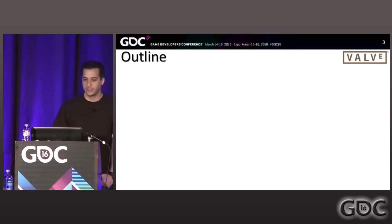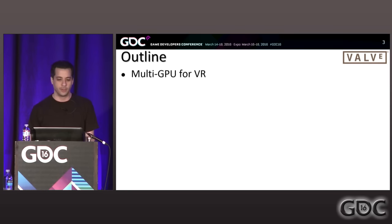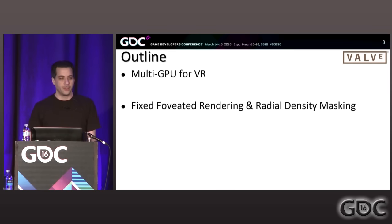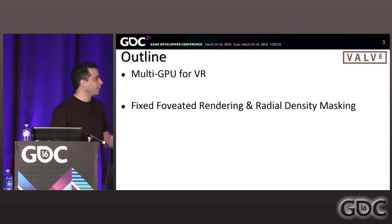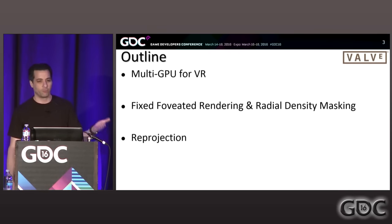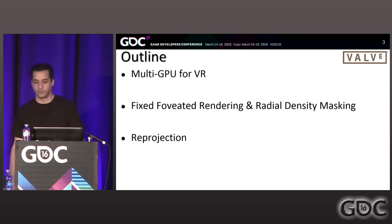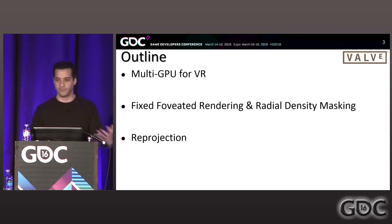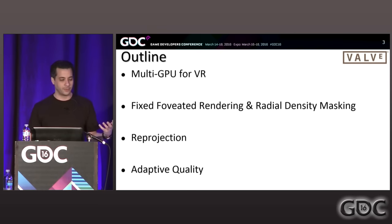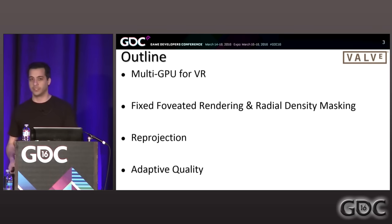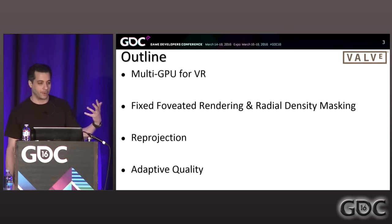Here's what I'm going to talk about today — four sections. First, multi-GPU for VR, specifically how we use two and four GPUs for VR. Then two methods for reducing fill rate at the periphery: fixed foveated rendering and radial density masking. Then reprojection — we haven't said much about it over the last year or two, so I'll cover our thinking. And the last section is the adaptive quality system — how to scale your renderer up and down to maintain frame rate and give a better quality result.